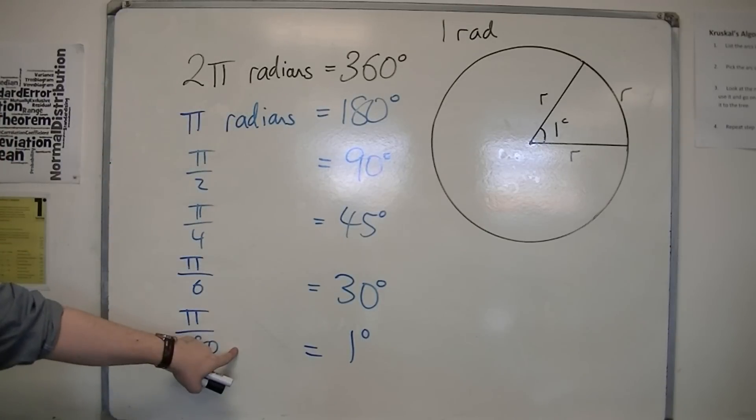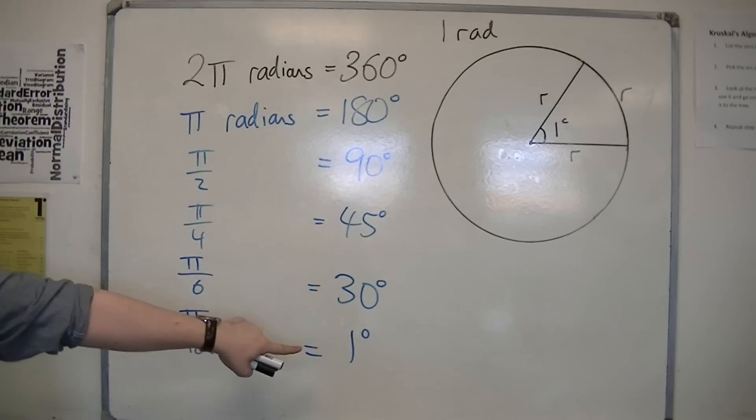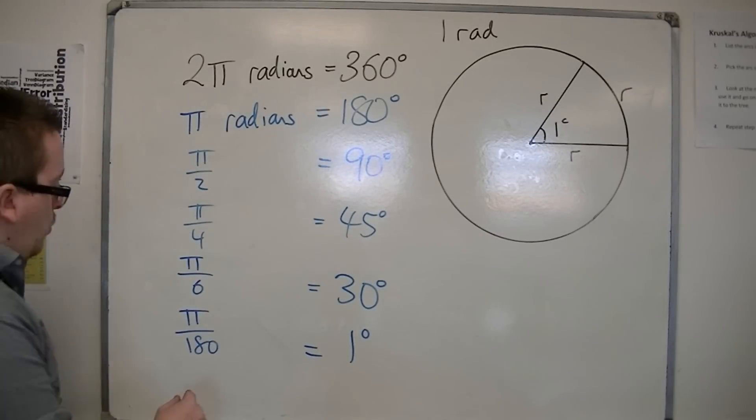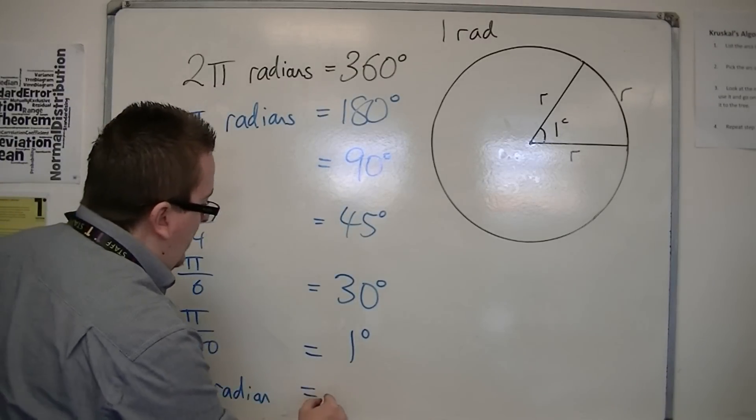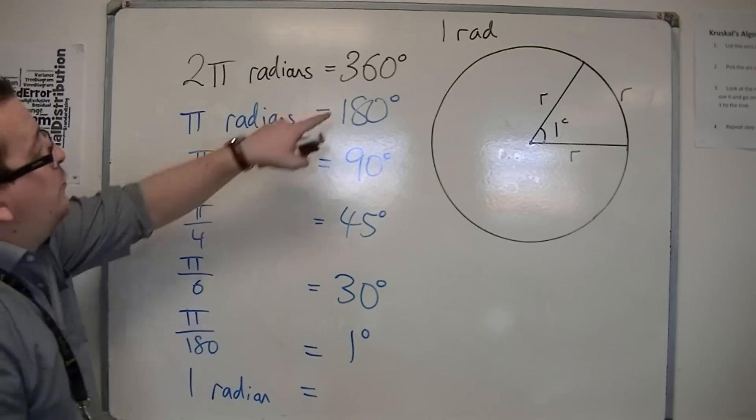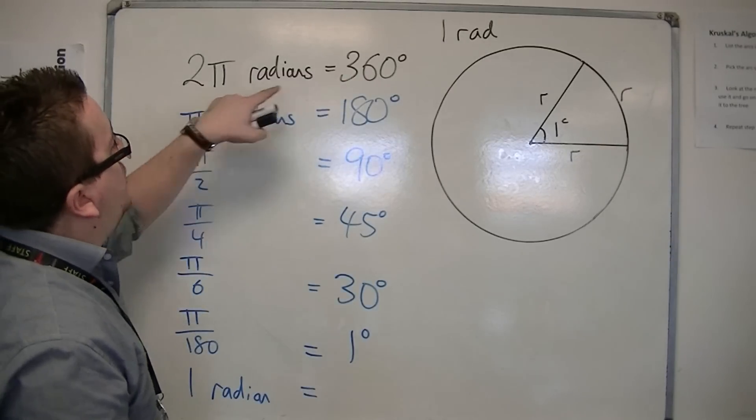So this is the radians measure, and this is the degrees measure. So if I wanted 1 radian, how many degrees is that?